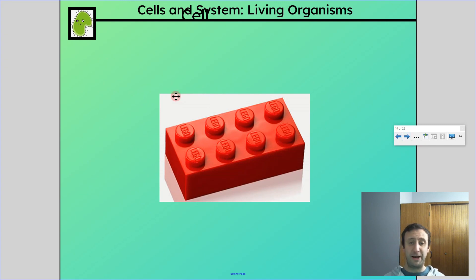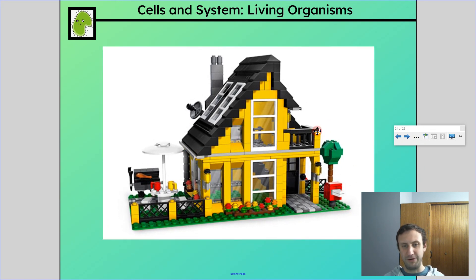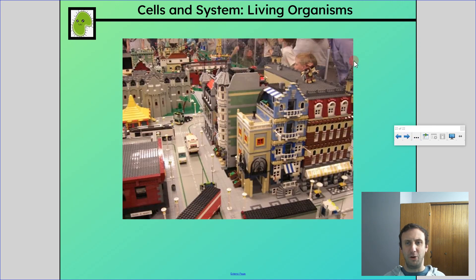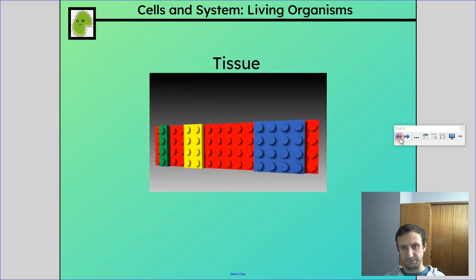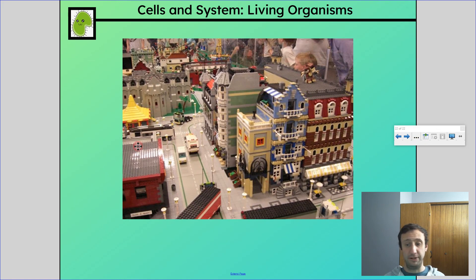Here's a nice analogy: one Lego block is a cell. A bunch of Lego blocks together — normally similar ones — is like a tissue. A bunch of different tissues together performing one kind of function, like a house to hold Lego people, is an organ. A bunch of organs together making a big Lego metropolis would be like a system. And a bunch of those systems together in a big world would be the organism.